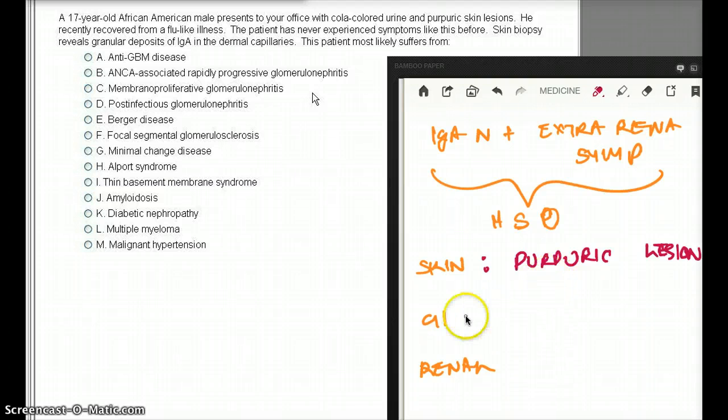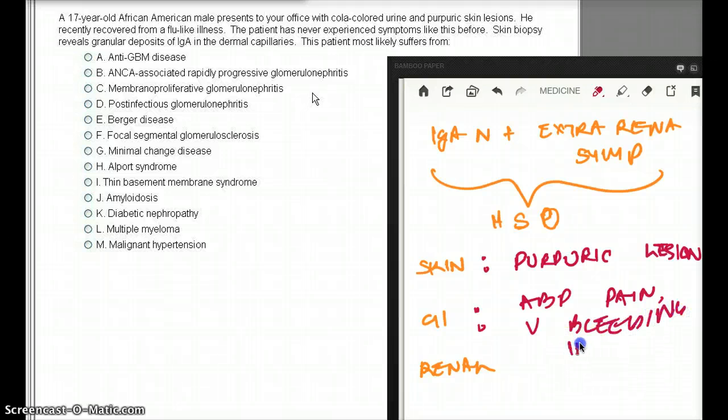I'll try to find one. And then from GI, we're going to see abdominal pain. So there's going to be abdominal pain, vomiting, and then there's going to be intestinal bleeding. And intussusception.